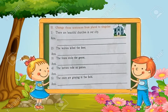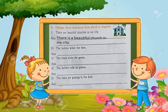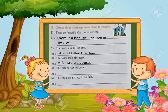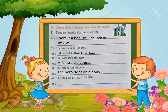Change the sentences from plural to singular. Number 1: There are beautiful churches in our city. Answer: There is a beautiful church in my city. Sentence 2: The wolves kill the deer. Answer: A wolf kills the deer. Sentence 3: The fox stole the geese. Answer: The fox stole a goose. Sentence 4: The heroes rode on ponies. Answer: The hero rides on a pony. Sentence 5: The oxen are grazing in the field. Answer: The ox is grazing in the field.